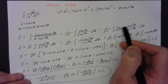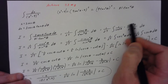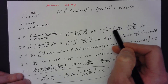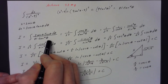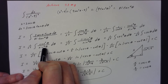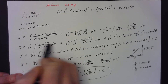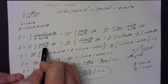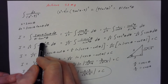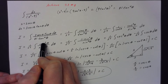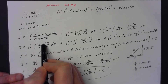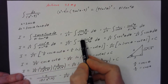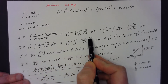The cosine cubed cancels with the factor of cosine in the denominator to leave me cosine squared in the numerator. At this step, I still can't use a u-substitution — if I let u equal sin θ, du would be cos θ dθ, not cosine squared. So I used the Pythagorean identity and said cosine squared equals 1 minus sine squared θ.